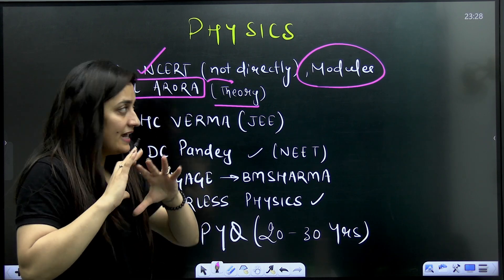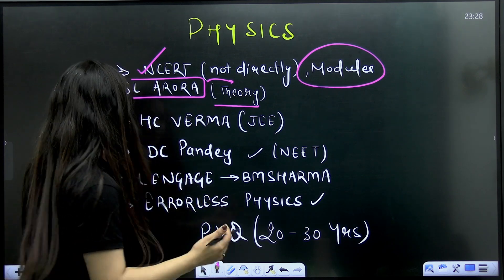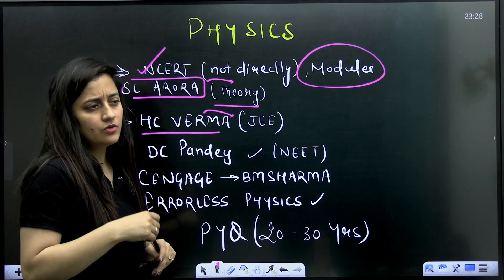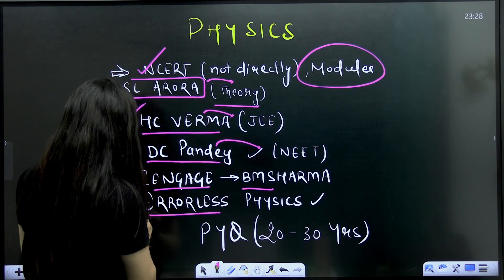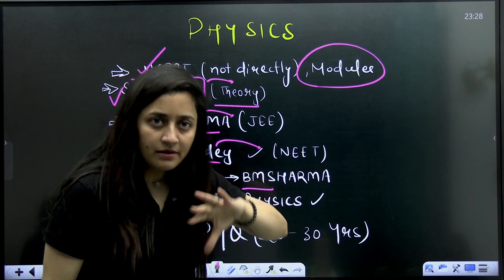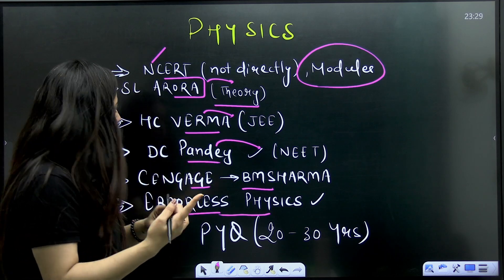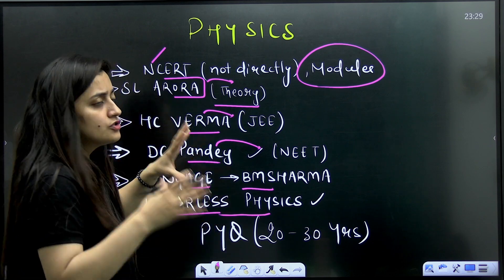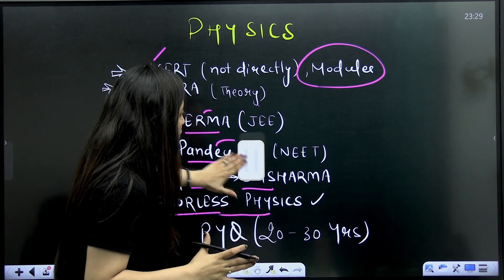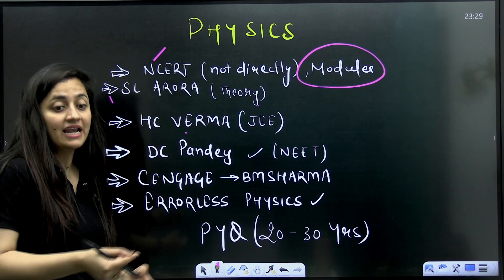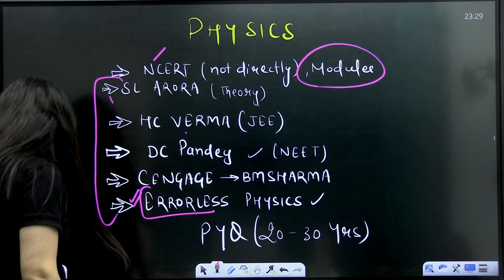If you have a strong interest in physics and want deeper theory, SL Arora is very good — the theory part is presented in a great manner. HC Verma is mainly for JEE, but if your physics is strong, go for it. DC Pandey is better suited for NEET. Cengage by BM Sharma is also available. Errorless Physics is highly recommended by many people because it has both theory and MCQ practice. These are suggestions only — you don't need to buy all of them; pick one based on your comfort and convenience.